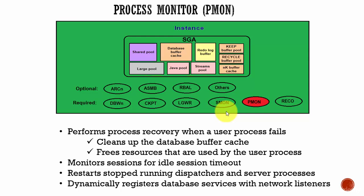For example, if the user is trying to update the customer table and for some reason the user process fails, then the process monitor comes into picture. It cleans up the database buffer cache used by that user process, changes the status of the customer table from active to inactive, releases any locks that are established, and removes the process ID from the list of active processes. This is what exactly it does whenever a user process fails.